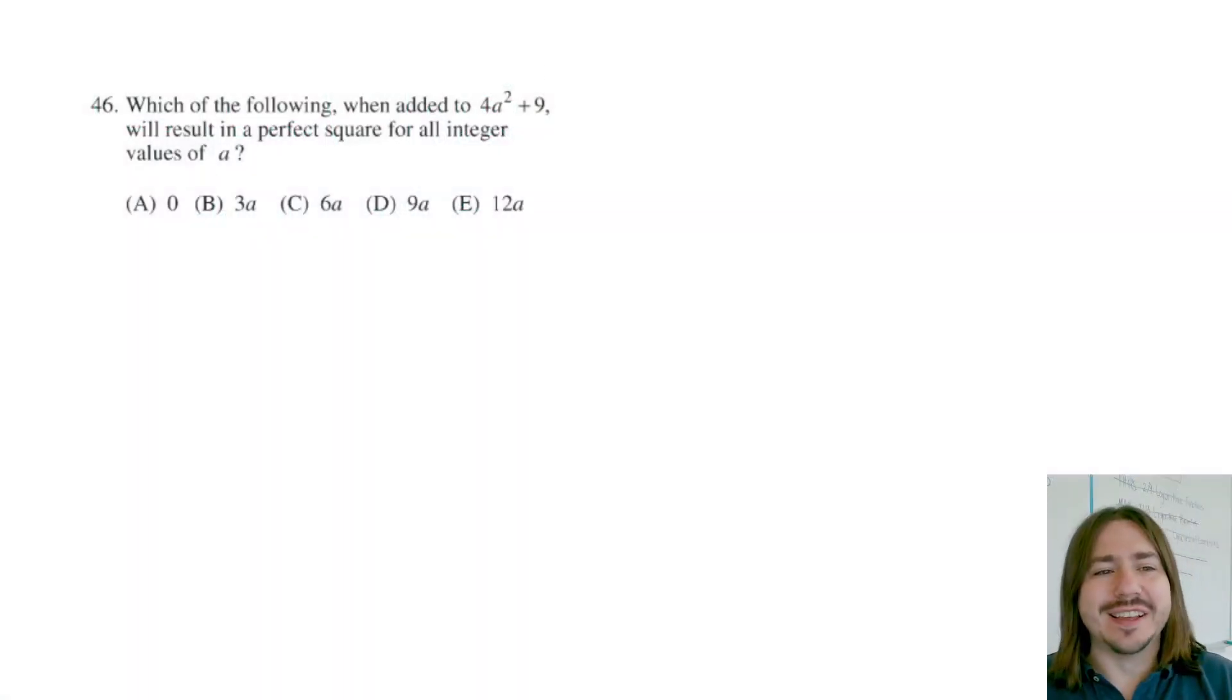Hey y'all welcome back. Number 46 says which of the following when added to 4a squared plus 9 will result in a perfect square for all integer values of a.